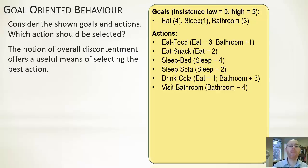At the minute we've got an eat insistence of four. So I'm fairly hungry. I've got a sleep insistence of one. So I'm reasonably awake. And a bathroom insistence of three. So I wouldn't mind going to the bathroom. I've got a set of available actions that I can do. So I could eat some food.